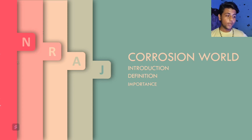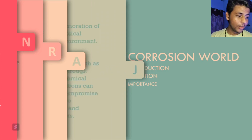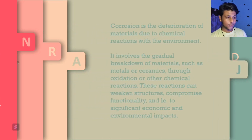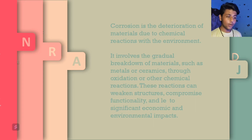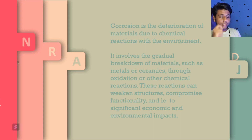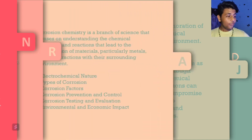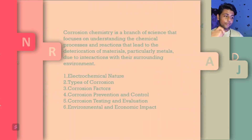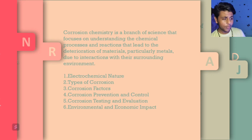So as you can see in the PPT, today we are going to talk about corrosion. Corrosion is the deterioration of materials due to chemical reactions with the environment. It involves the gradual breakdown of materials such as metals or ceramics through oxidation or other chemical reactions. These reactions can weaken structures, compromise functionality, and lead to significant economic and environmental impacts. Corrosion chemistry is a branch of science that focuses on understanding the chemical processes and reactions that lead to the deterioration of materials, particularly metals, due to interactions with their surrounding environment.